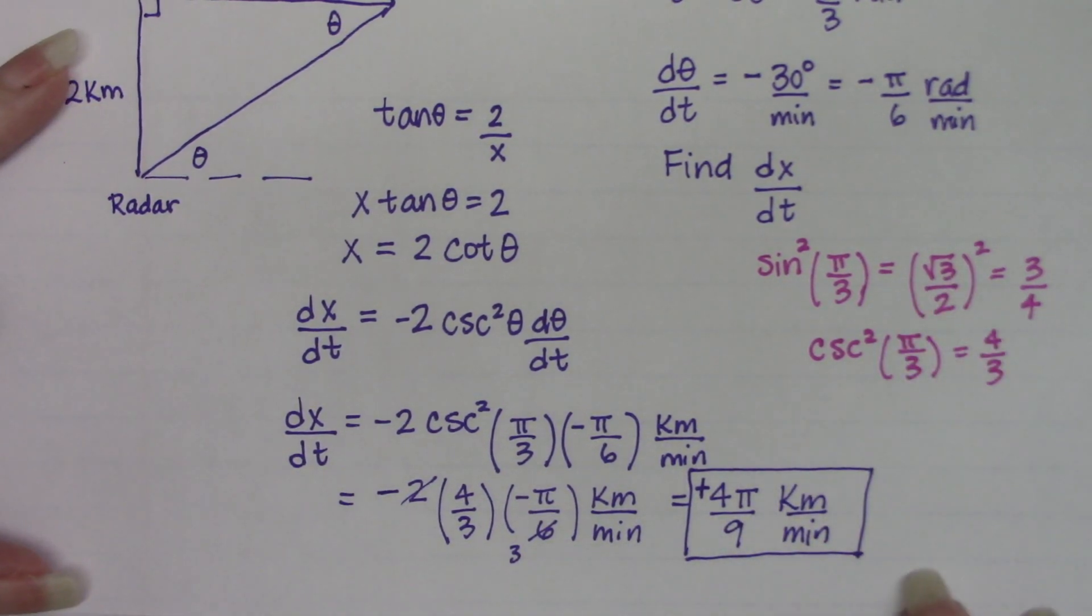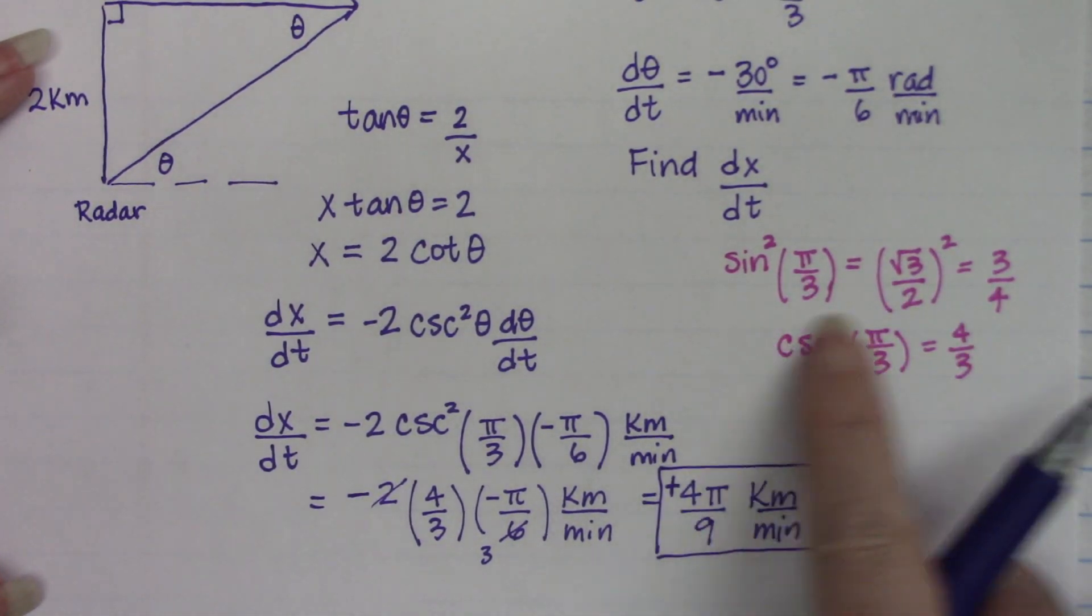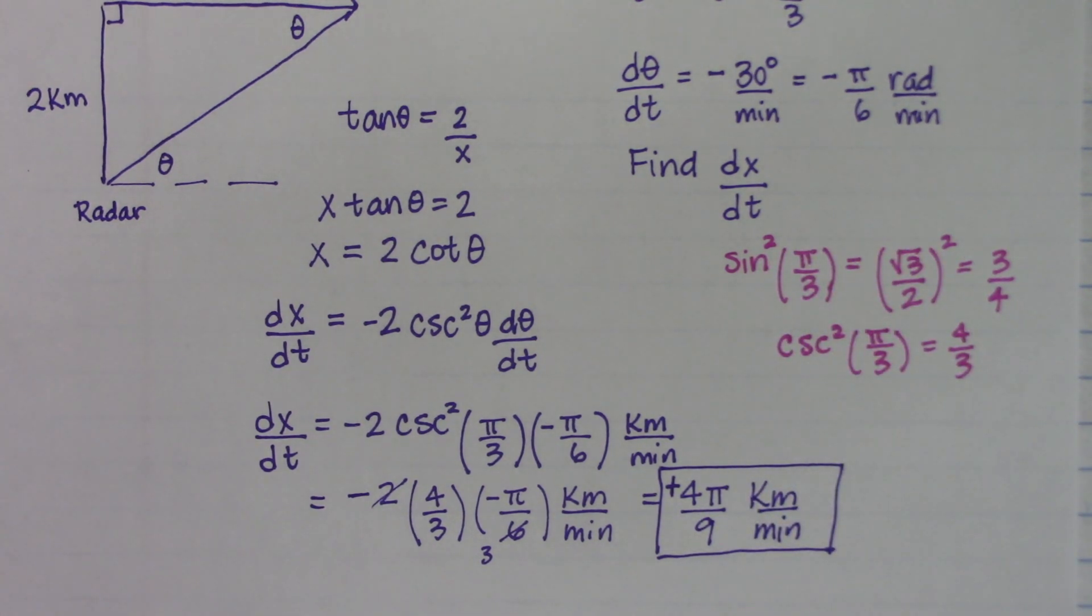Whenever you have a trig function that is not sine, cosine, or tan, this is a good trick. Just figure out what it is for sine or cosine, use your knowledge of the reciprocal, and you can appropriately flip your fraction.